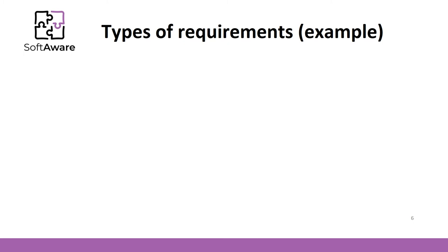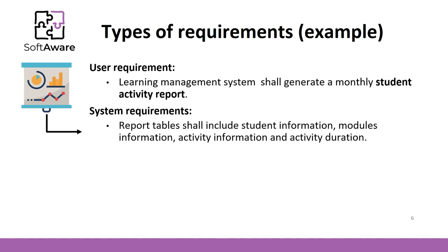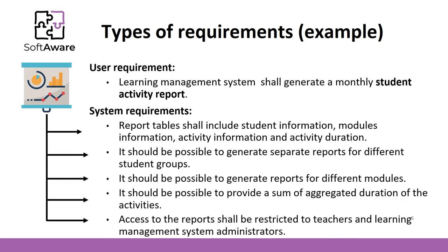For better understanding, let's take an example. In user requirements, only one sentence is presented: a learning management system needs to be created that should generate a monthly student activity report. While system requirements specification shows what needs to be implemented to accomplish user requirements. In this example, the report table shall include student information, module information, and activity duration. It shall also be possible to generate separate reports, among other things.